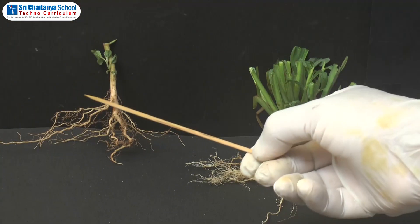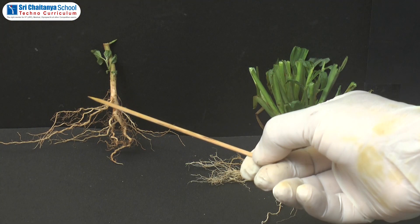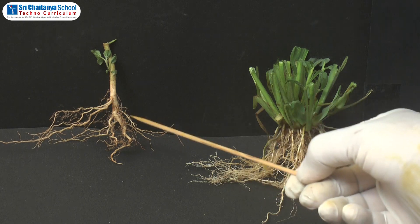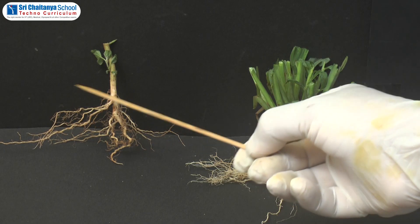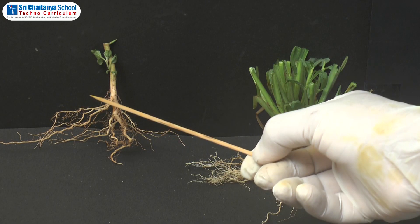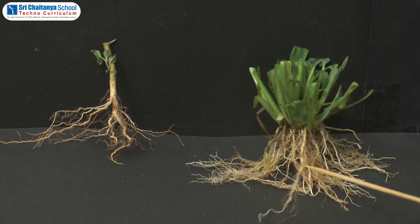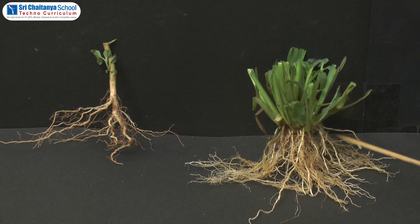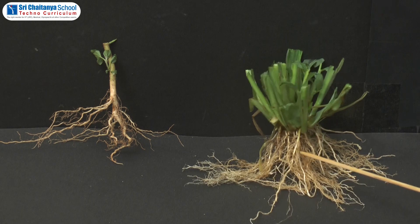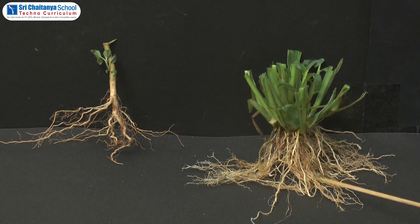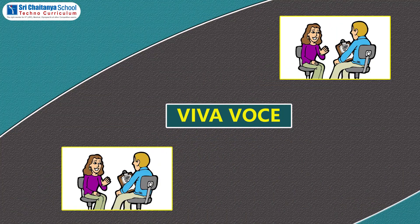But dicot plants have a tap root system. Tap root system is the characteristic feature of dicot plants. Fibrous root system is the characteristic feature of monocot plants.